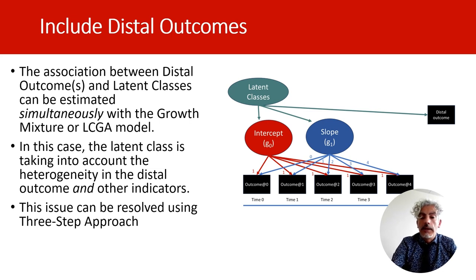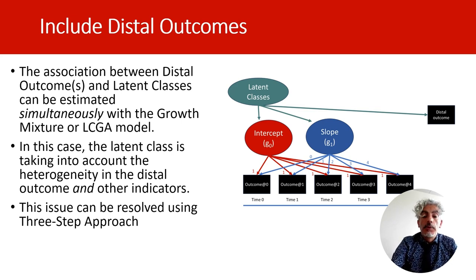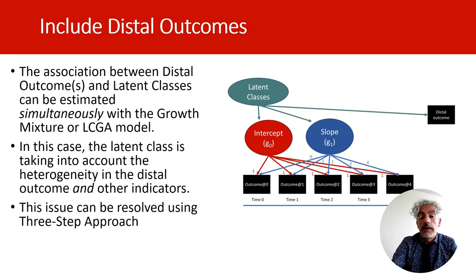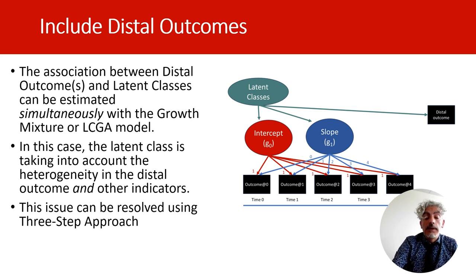A solution has been to consider individual latent class affiliation as a variable that could be used as a predictor in other analyses, for example in ANOVA. But the problem with treating latent class affiliation as if it were an observed variable is that latent class affiliations are uncertain. In the first presentation, I gave an example of how one individual could be assigned to a latent class when they had only a 50% probability of being in that class. If we fail to account for this uncertainty, the analyses will be biased.